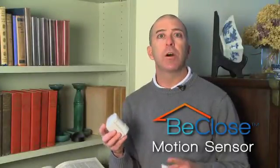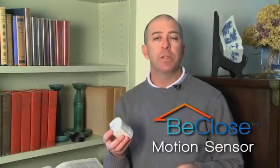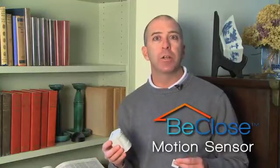Here's the BeClose motion sensor. Like all of our sensors, it's wireless with a battery in it. You place it in parts of the house that you want to monitor, where you want to get a sense of activity.